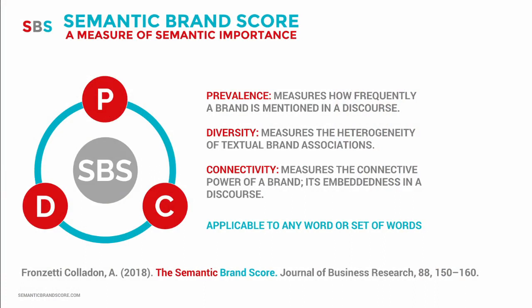In this work we make a novel use of an indicator of semantic importance that is calculated combining methods and tools of text mining and social network analysis. This indicator is called Semantic Brand Score, we abbreviate it as SBS, and it was originally conceived for the study of brand importance. Now it has been extended to the study of semantic importance more in general.